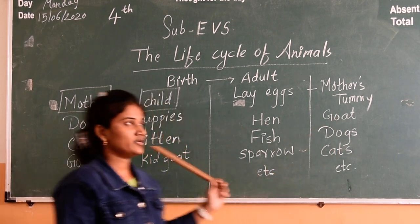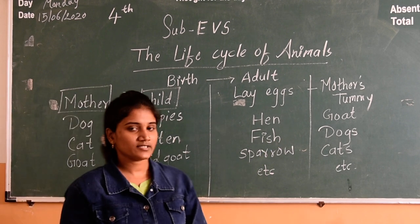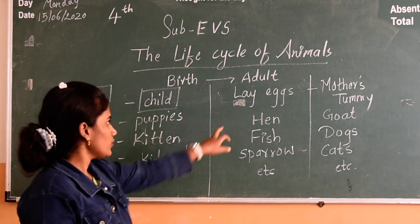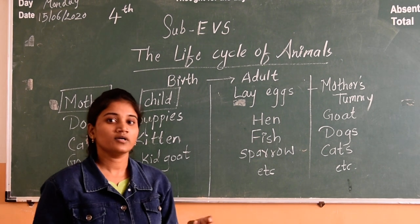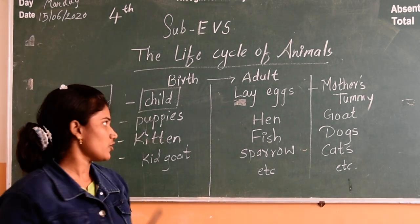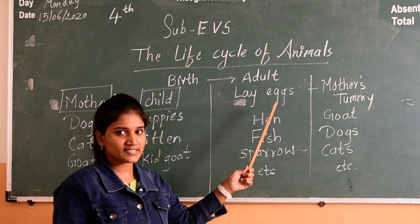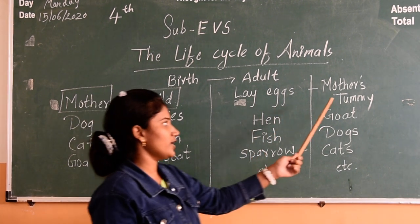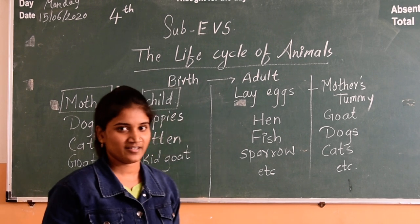So this is the life cycle of animals that we learned today. For homework, you have to make a list of the animals which lay eggs and the animals which are directly born from their mother's tummy.